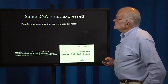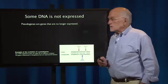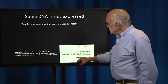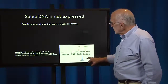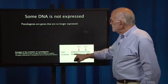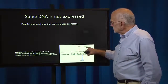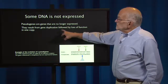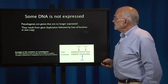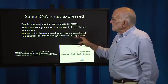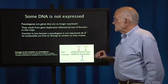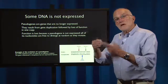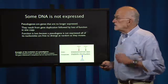Some DNA is not expressed. Pseudogenes, for example, are genes that are no longer expressed. In the chimpanzee a particular gene is functional; in humans it is not functional, and there have been three different mutations between them: an insertion, a deletion, and a point mutation. Pseudogenes result from gene duplication followed by loss of function in one copy. All nucleotides in a pseudogene are then free to diverge at random as they mutate, so there is a buildup of genetic variation.